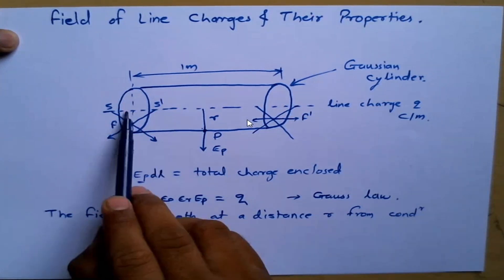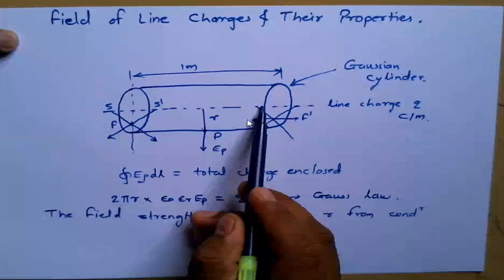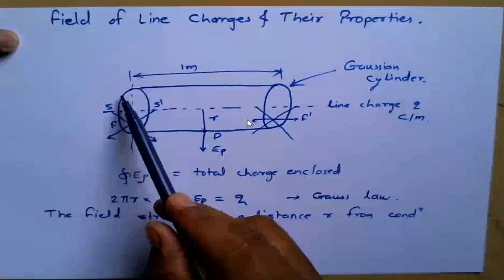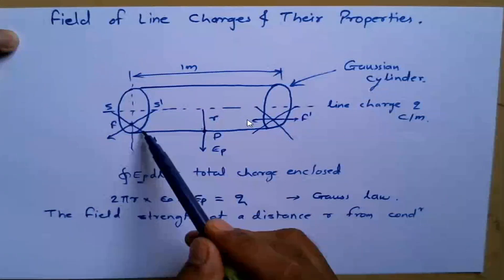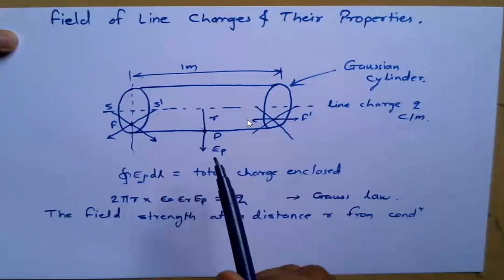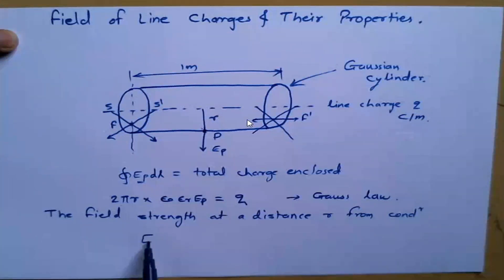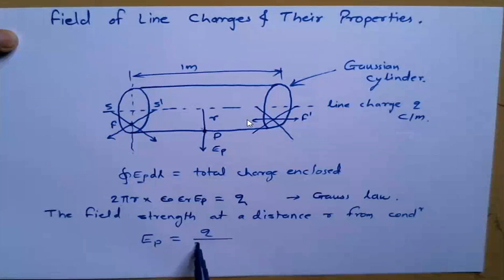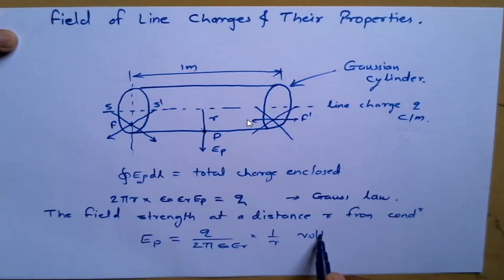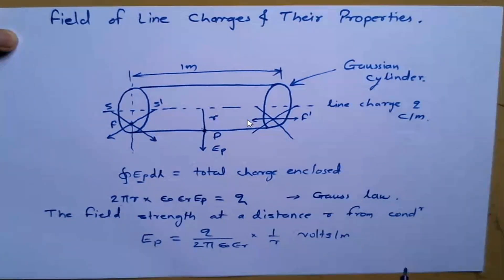Here is the particular conductor, and since there is an electrostatic field present, this is the area at which the field is present. We are going to calculate the field strength at this particular point P. From the equation, EP can be written as EP equals Q upon 2 pi epsilon-0 epsilon-r into 1 upon r, in volts per meter.